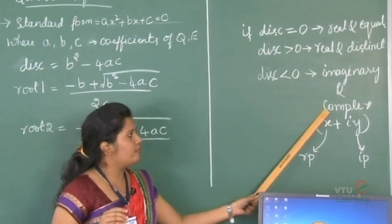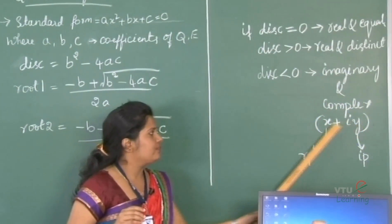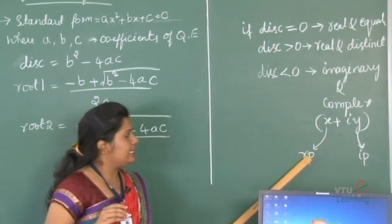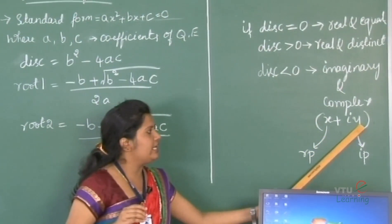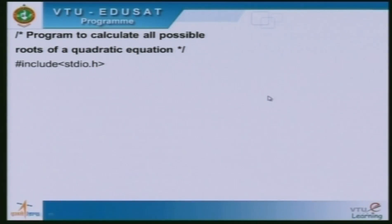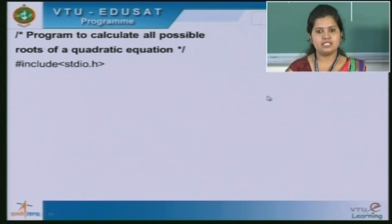The standard form of complex is x plus iy. Here, x indicates the real part and y indicates the imaginary part. This program calculates all possible roots of a quadratic equation. The very first line in this program is #include stdio.h. Hash include is a preprocessor directive. It includes all the header files such as stdio.h, conio.h, math.h and so on.